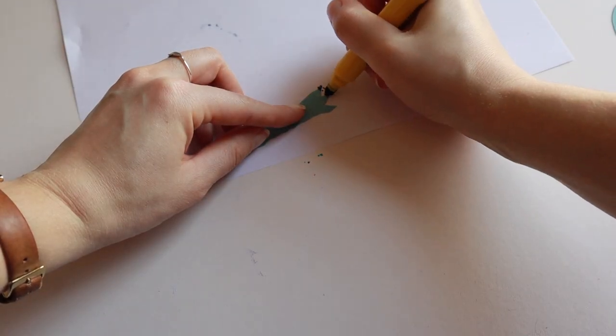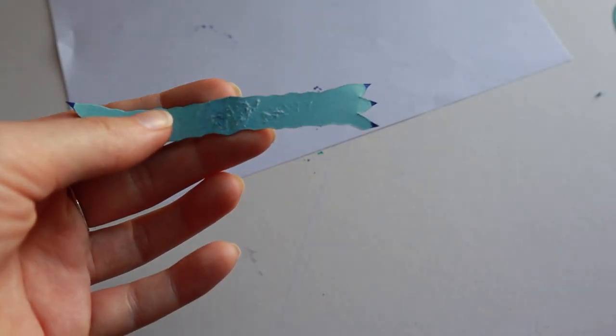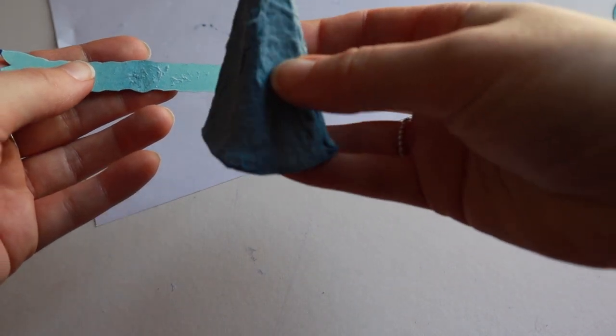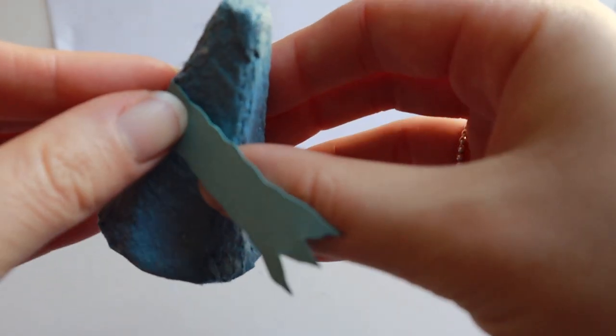Draw on some details if you want to. Put a dab of glue in the center of your arms where your fold line is. Curve your arms around your body and press firmly so they stick.